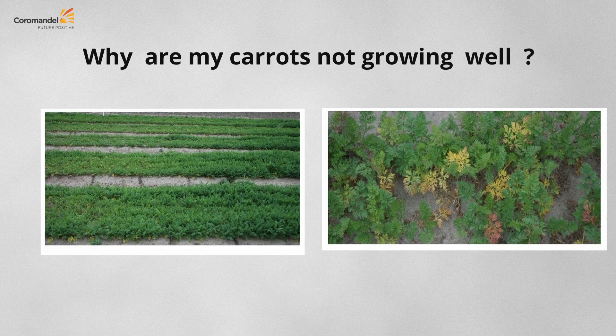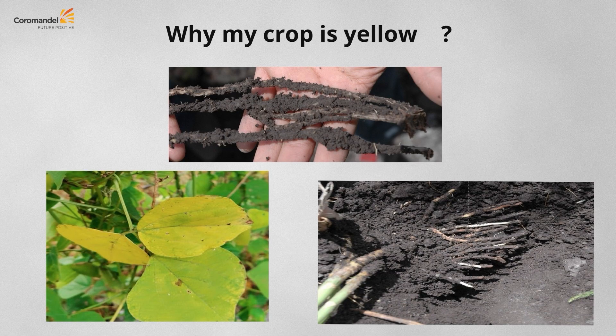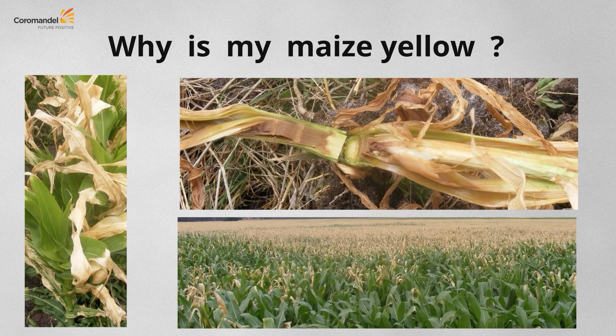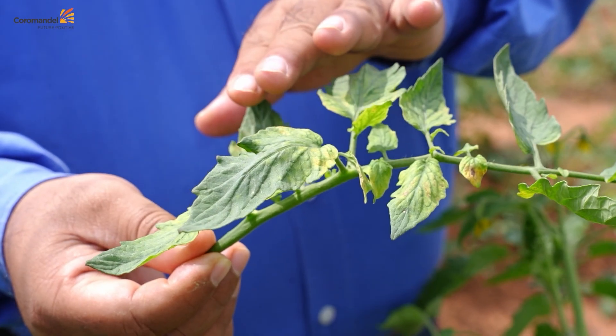In some parts the crop is not growing well because of undulating conditions where water stagnation is there — that's why it is not growing properly, causing yellowing of the crop. Yellowing can also be due to improper root growth caused by water stagnation. Additionally, injury to plants due to freezing can cause the plant to turn yellow, which is not due to nutrient deficiency.